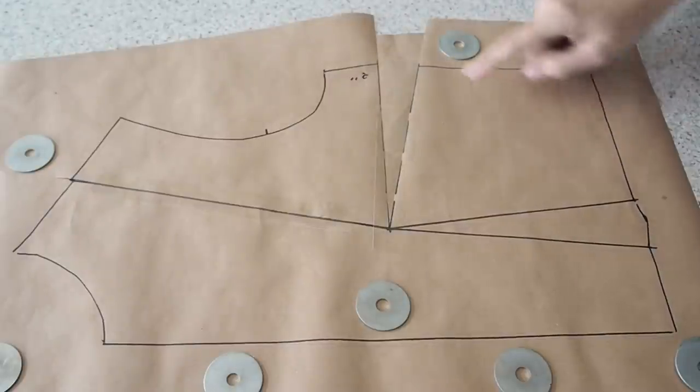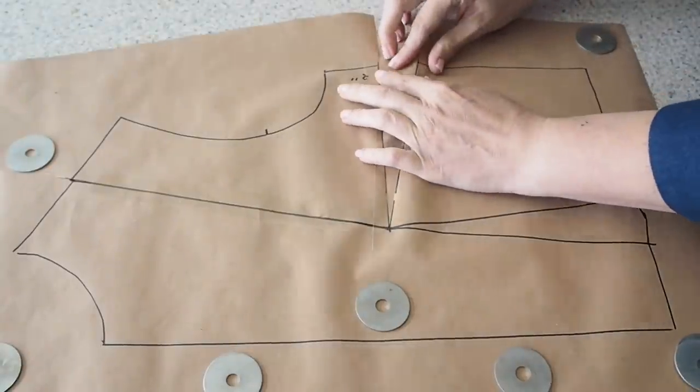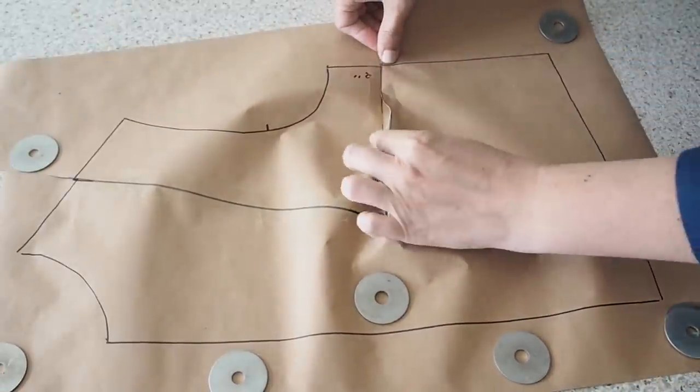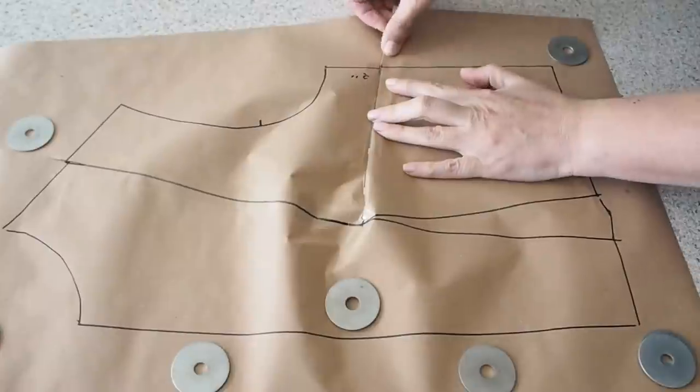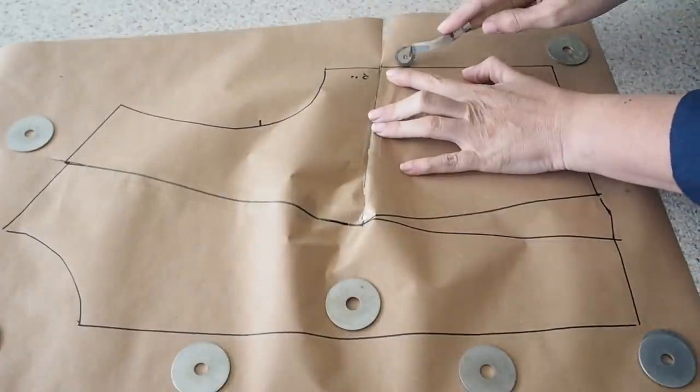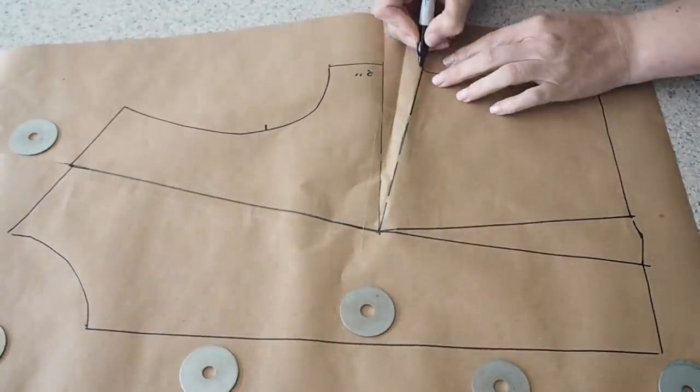So now I just have a couple more things to do before I can sew this pattern up. One is to give myself that little triangle you can see at the waist dart at the side seam. So to do that, I'm just creasing that bottom dart leg, laying it over the top, running my tracing wheel along the side seam, drawing in my little triangle.